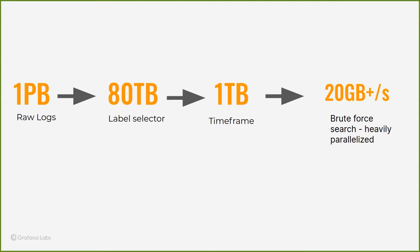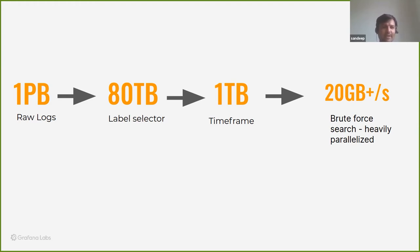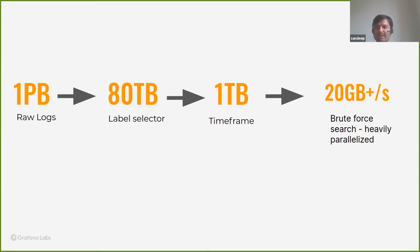This is the power of Loki — it reduces the index to a minimal amount. As a model example: if you have one petabyte of logs, you have 80 TB of selectors for the time range and you reduce the time frame so it searches one TB of logs. With brute force it can go up to 20 Gbps and more. We'll see how fast Loki actually is in a bit.